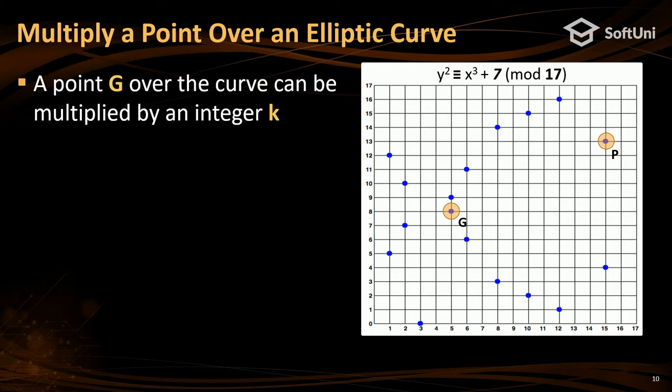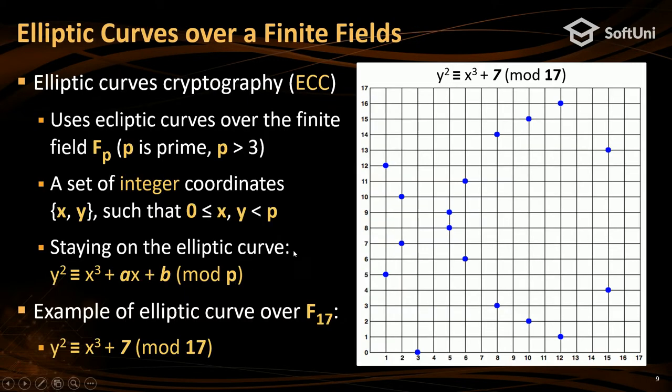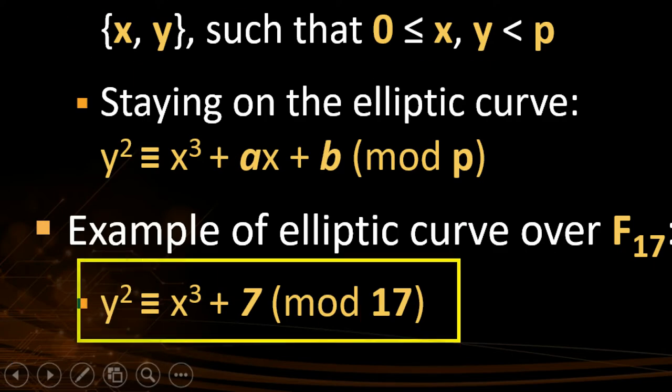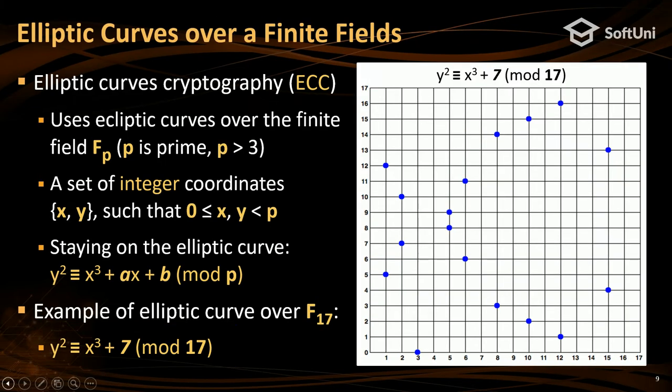How does the math work? We have a point G called the generator point — it's just a constant, a hard-coded X and Y coordinate. When we multiply it by a secret number K, it moves to another point. Because when it moves to the right past the boundary, it starts from the left — that's the property of the modulo. You know: mod N. When we have an equation modulo 17, if a result is 19, it wraps back from right to left.